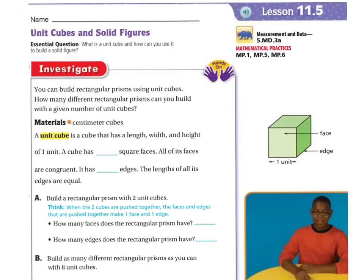A cube has six square faces. Here are the faces: one, two, three — there's one on the bottom, four — one on that side, five — and one on the back side, six. All of its faces are congruent.